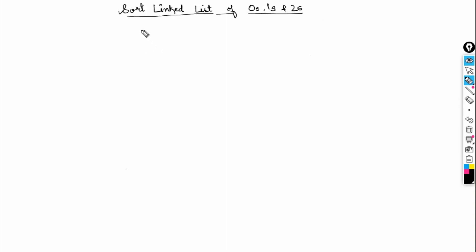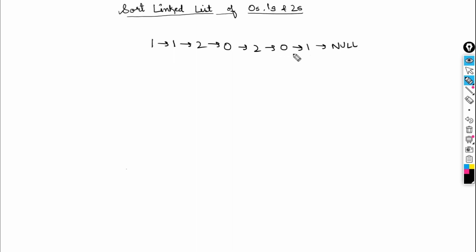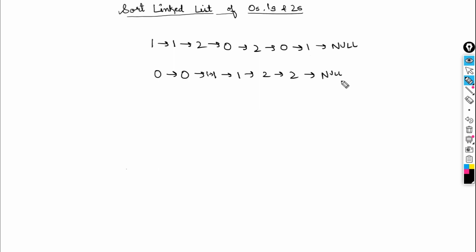In this video we're going to discuss how we can sort a linked list of zeros, ones, and twos. Say this is my linked list — it contains nodes: 1, 1, 2, 0, 2, 0, and 1. After sorting, it should appear like this: all the zeros aggregated on one side, then all the ones, and then all the twos. So there are three ones.